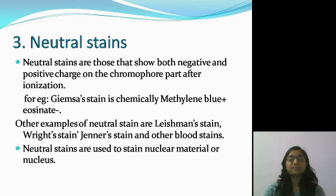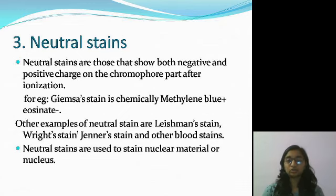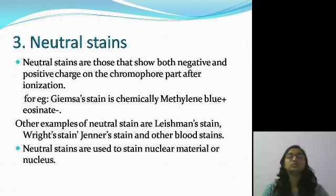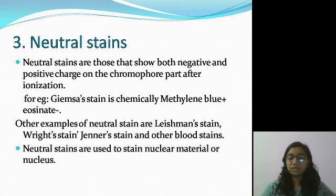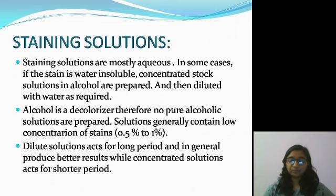An example of a neutral stain we saw is Giemsa stain. In Giemsa stain, methylene blue⁺ is a chromophore part with a positive charge, and eosinate is the other chromophore part with a negative charge. So methylene blue⁺ was seen in basic stains and eosinate was seen in acidic stains — meaning the mixture of acidic and basic stains is called a neutral stain. Other examples include Leishman stain, Wright stain, Jenner stain, and other blood stains. Neutral stains are generally used to stain nuclear material or the nucleus.